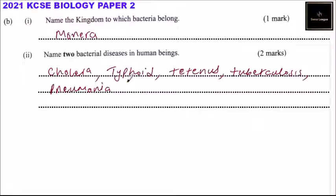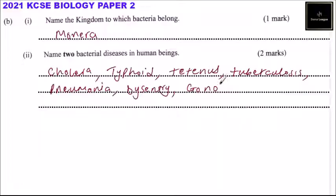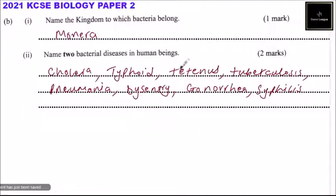Pneumonia is also a bacterial disease. You can also say gonorrhea is a bacterial disease. You can also mention syphilis. Any two of these bacterial diseases will earn you two marks.